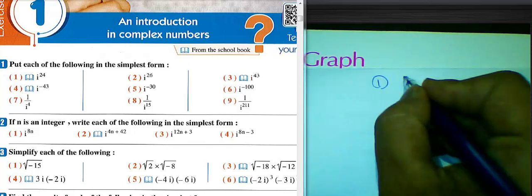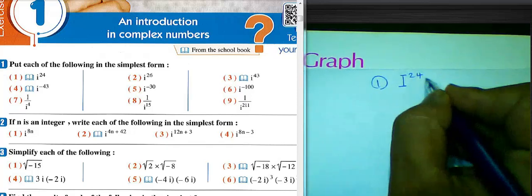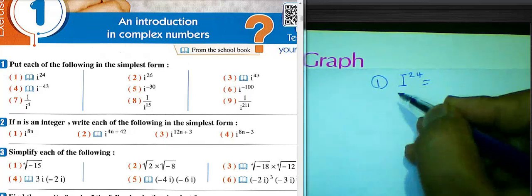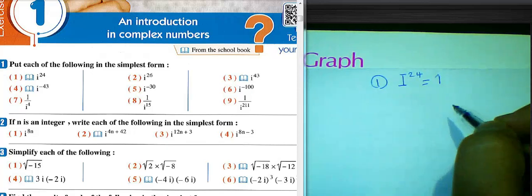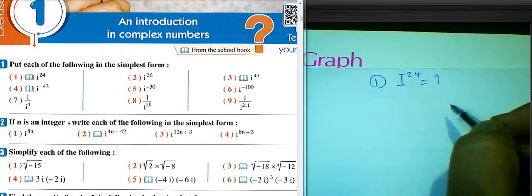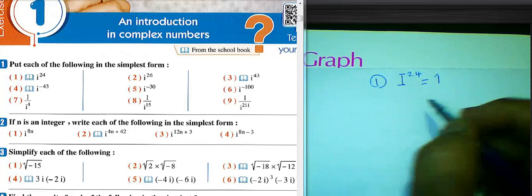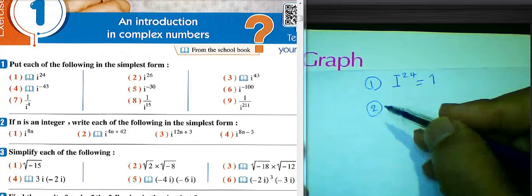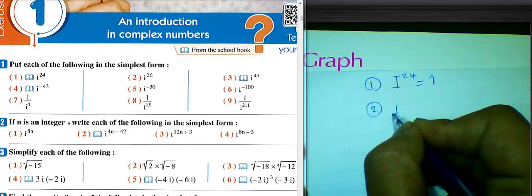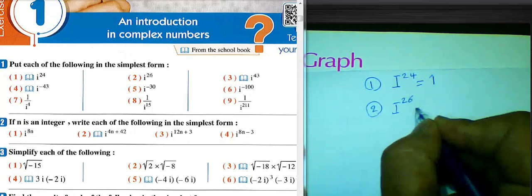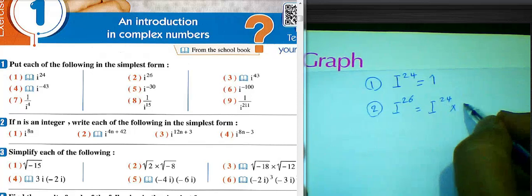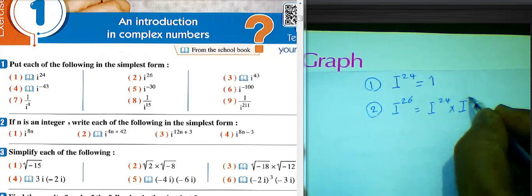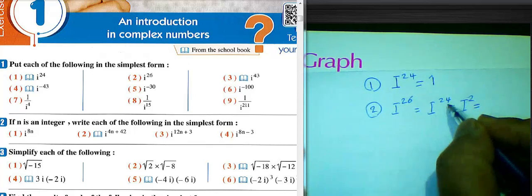Number one: i^24 equals 1, because 24 can be divided by 4, and i^4 equals 1. Number two: i^26 equals i^24 multiplied by i^2. i^24 equals 1.